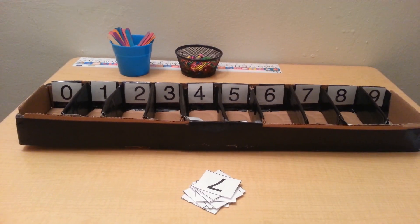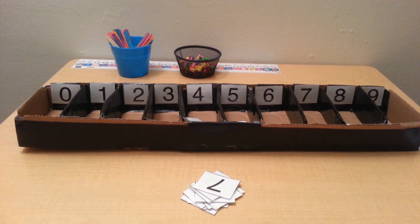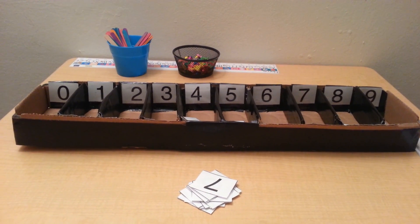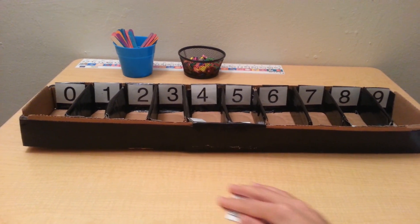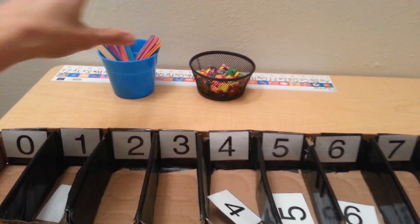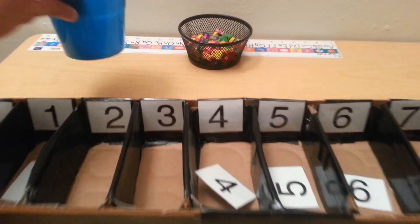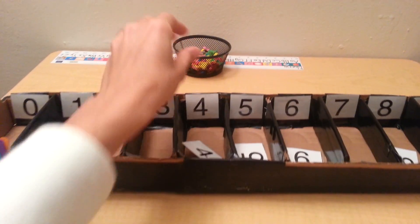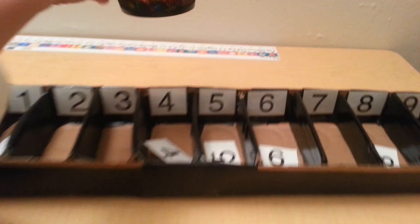Once the child has learned numbers zero through nine and is able to recognize numbers zero through nine, then you can move on to number quantity. And for this purpose, you can use some popsicle sticks or you can even use erasers.